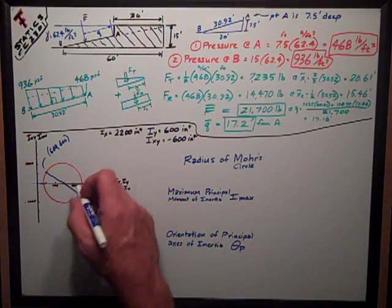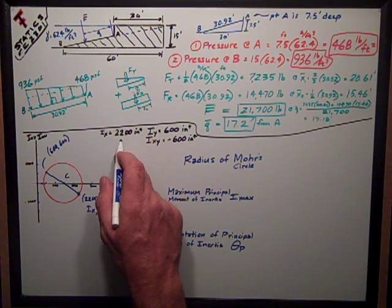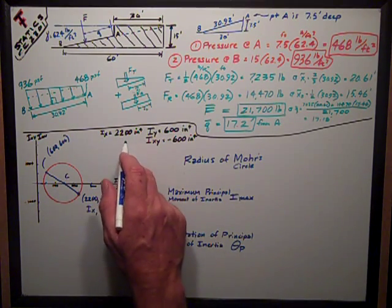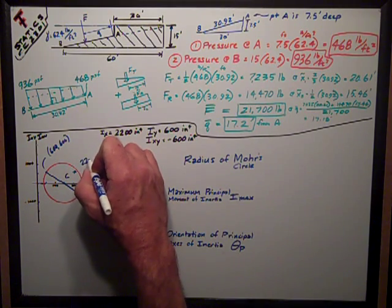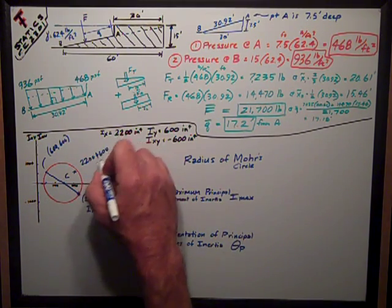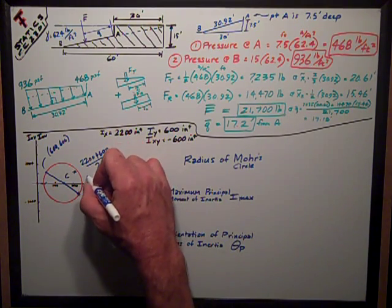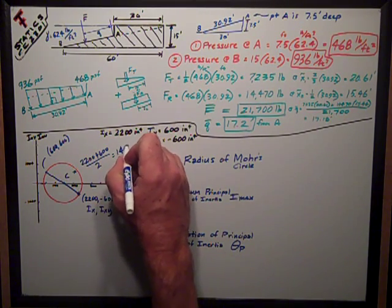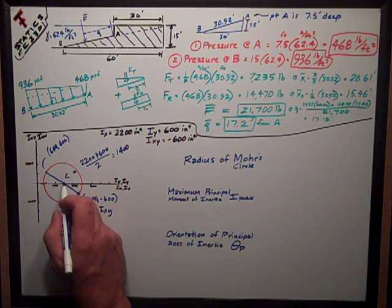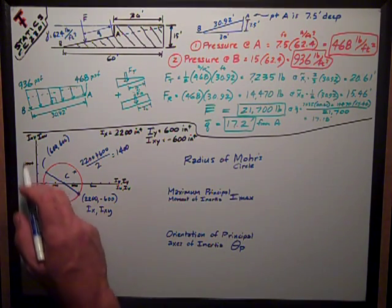Now I like to figure out where my center is. My center is really the average of those two, Ix and Iy. 2,200 plus 600 divided by 2, that's 2,800 divided by 2 equals 1,400.